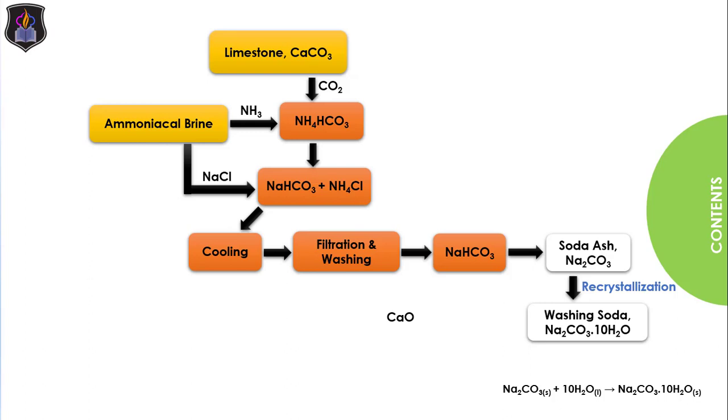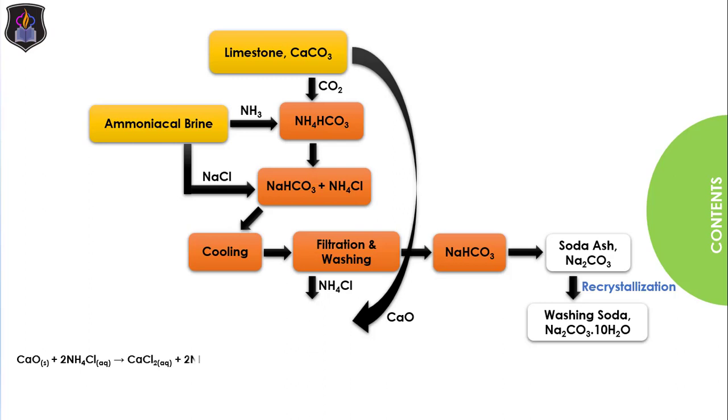The quicklime obtained from heating the limestone can also be made to react with the ammonium chloride left after the precipitation and filtration of the sodium hydrogen trioxocarbonate (IV) according to the equation to yield ammonia and calcium chloride.